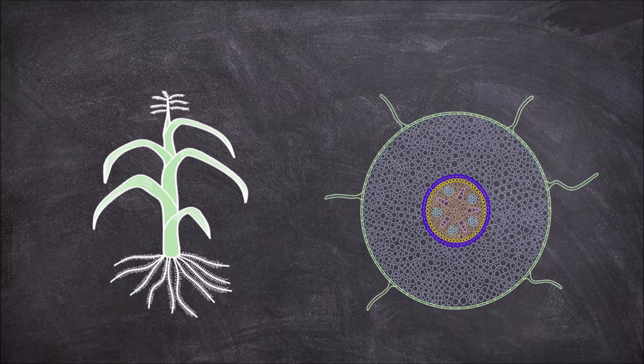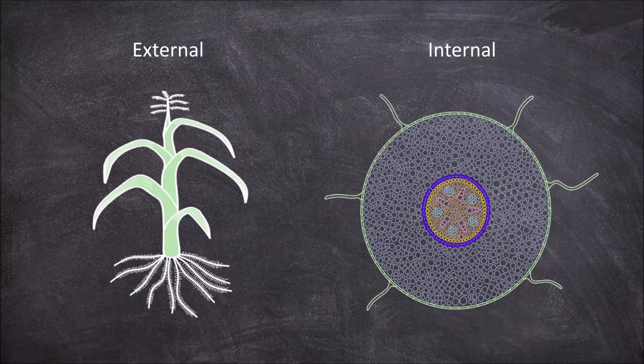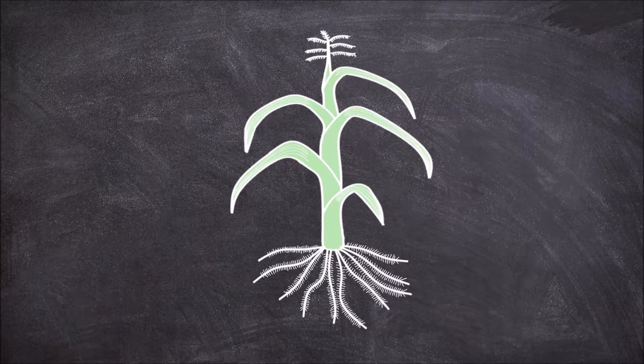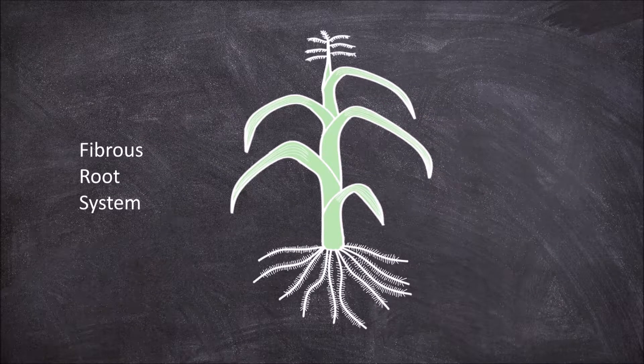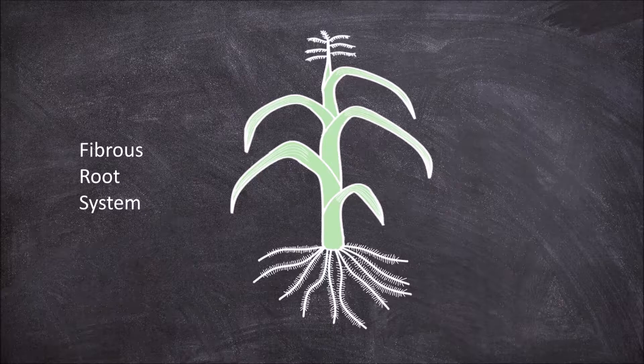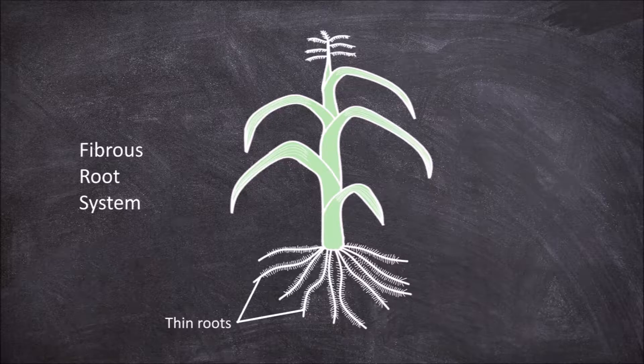In this video we are going to go over the external and internal anatomy of a monocotyledon root. The monocot root consists of a fibrous root system. The initial primary root is replaced with many thin roots originating from the base of the stem.